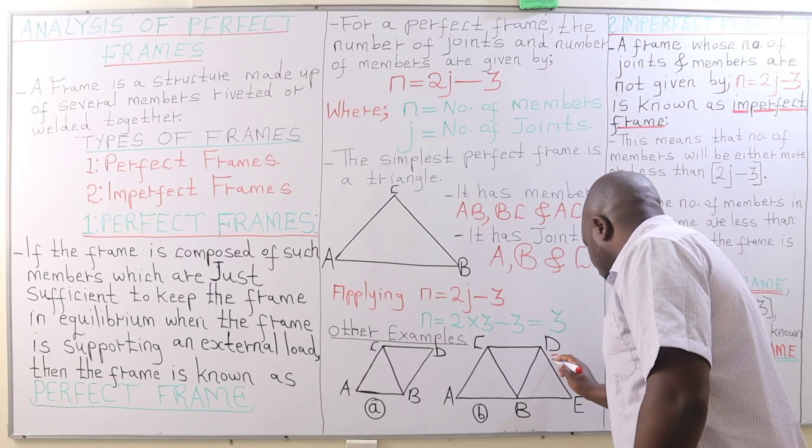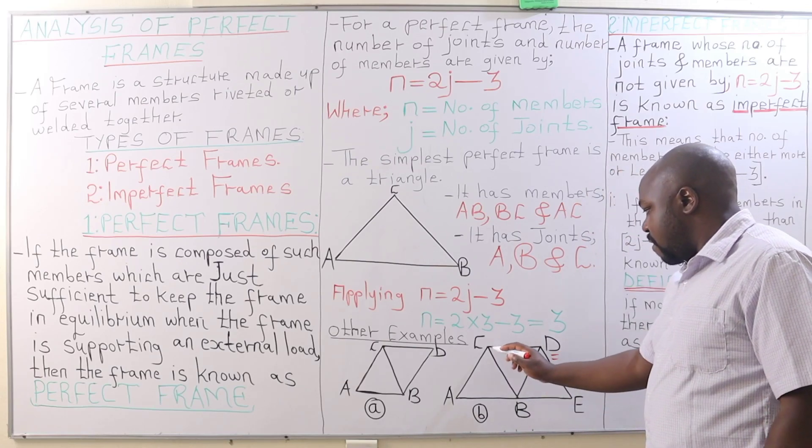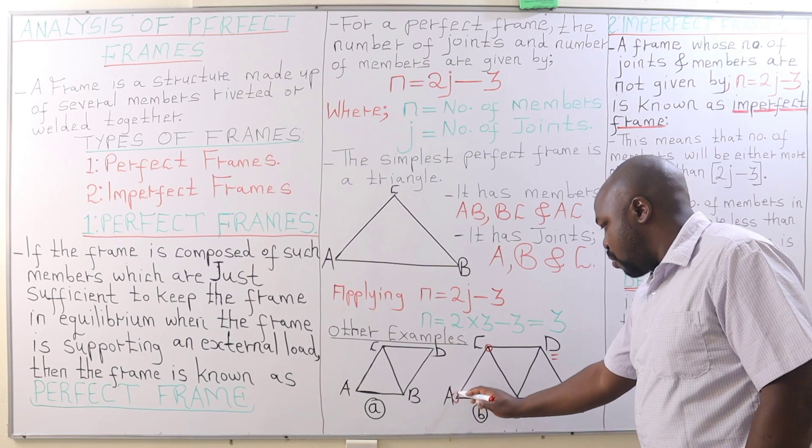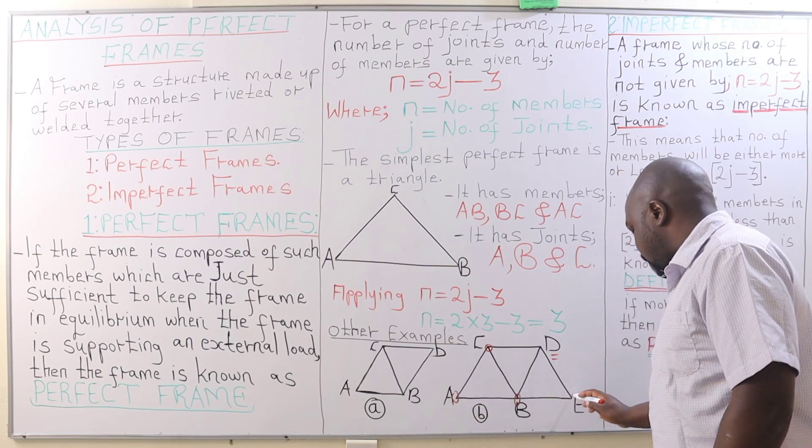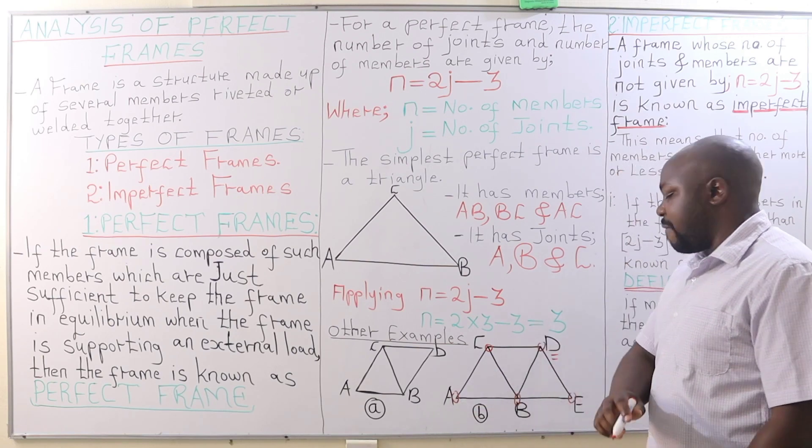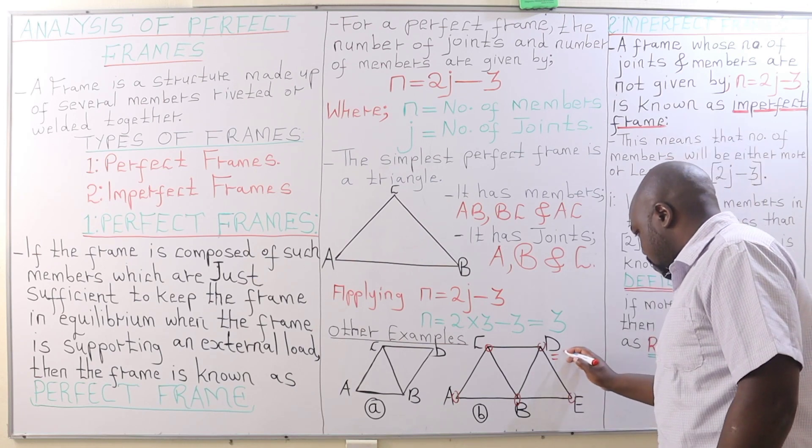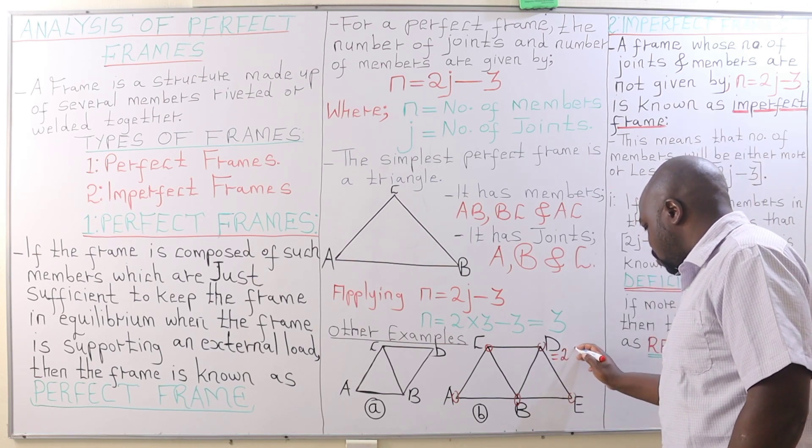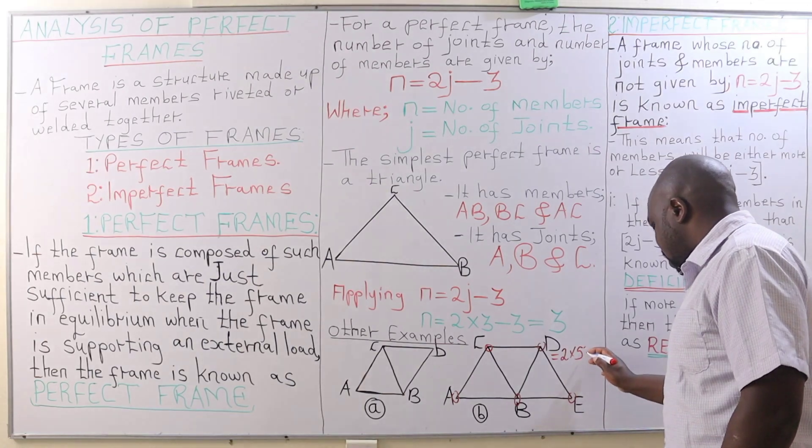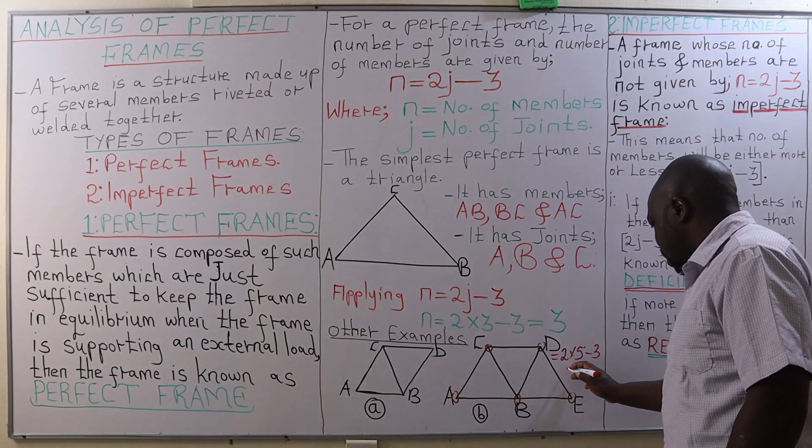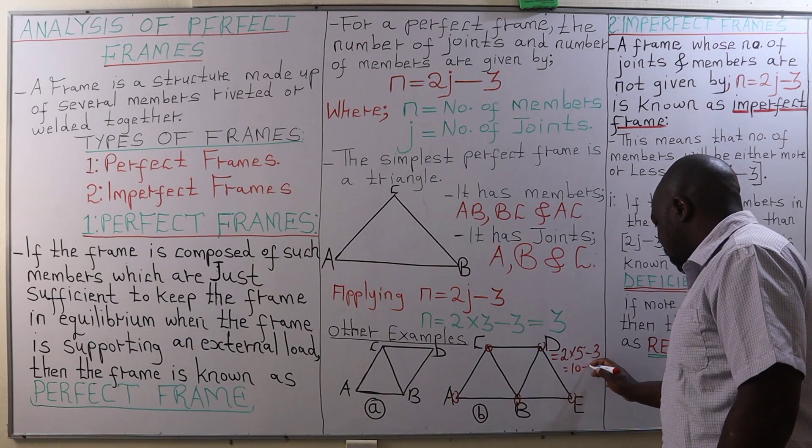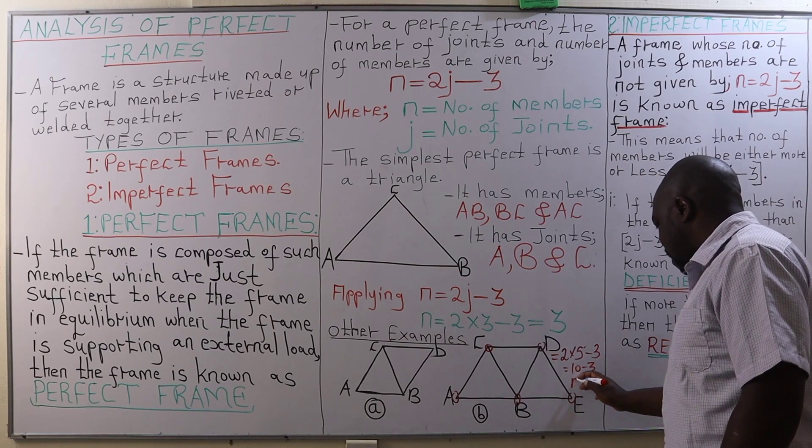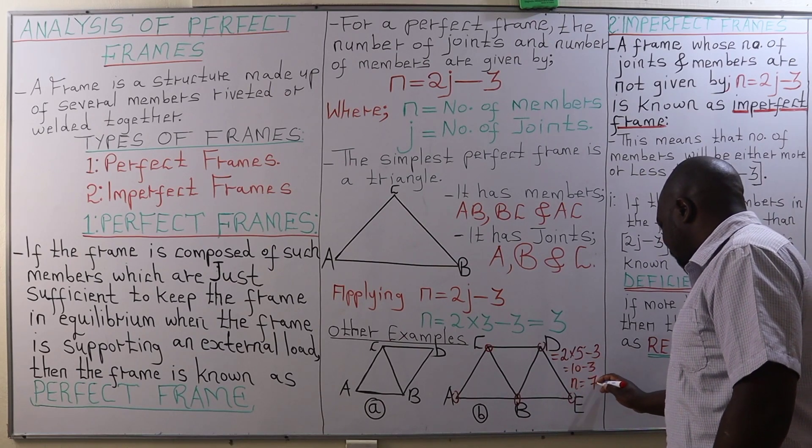For example, in this one, we have 1, 2, 3, 4, 5 - that's 5 joints. Therefore, to get the number of members, we take 2 times 5 joints, then subtract 3, and that's 10 minus 3. Therefore, the number of members will be 7.